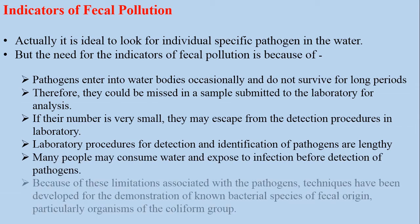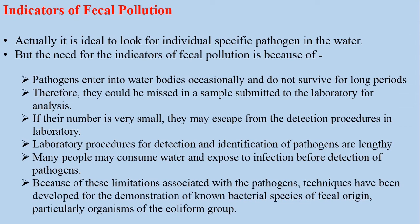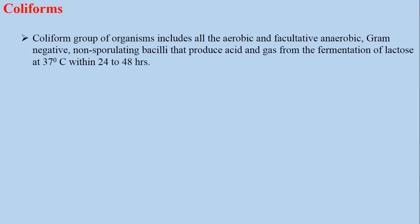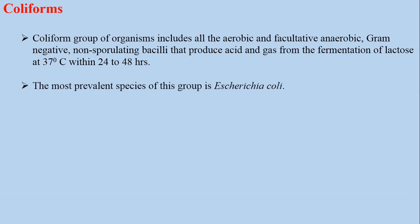Because of these limitations associated with the pathogens, techniques have been developed for the demonstration of known bacterial species of fecal origin, particularly organisms of the coliform group. The coliform group of organisms includes all the aerobic and facultative anaerobic, gram-negative, non-spore-forming bacilli that produce acid and gas from the fermentation of lactose at 37 degrees centigrade within 24 to 48 hours. The most prevalent species of this group is Escherichia coli.